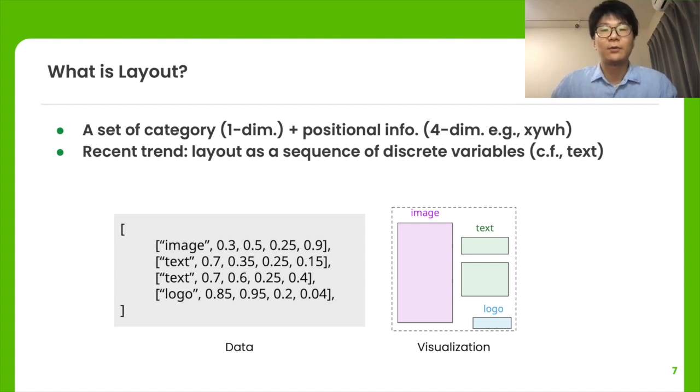First, we describe the formal definition of the layout. At the bottom, an example of a layout depicting a banner and its visualization is shown. A set of elements represents a layout. Each element contains one-dimensional categorical information and four-dimensional positional information. Although positional information is represented by continuous variables, a recent research trend in layout generation is to discretize positional information and describe the whole layout as a sequence of discrete variables like text.